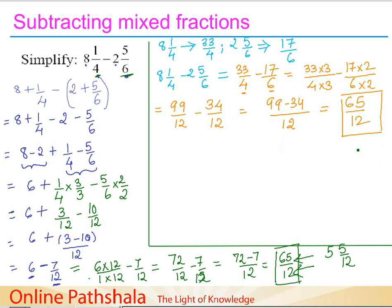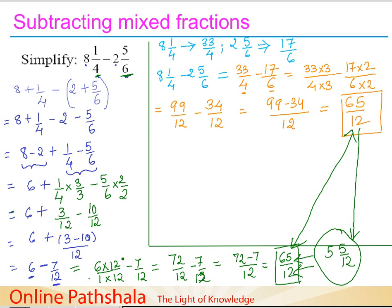Both methods give the same answer: 65/12, which can again be converted to the mixed fraction 5 5/12. The analysis shows that if you follow the method of subtracting whole and fractional parts separately and suspect the subtracted fraction is greater, it is better to convert both to improper fractions first, making the calculation much easier and less complicated.